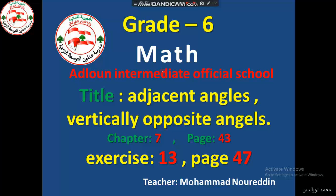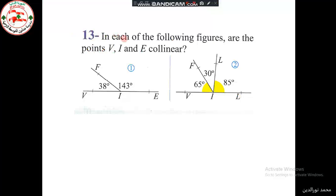Exercise 13 on page 47: In each of the following figures, are the points V, I, and E collinear? What do we mean by collinear? 'Co' means the same, 'linear' means line. So it's asking us, do the points V, I, and E belong to the same line? How can we check this?